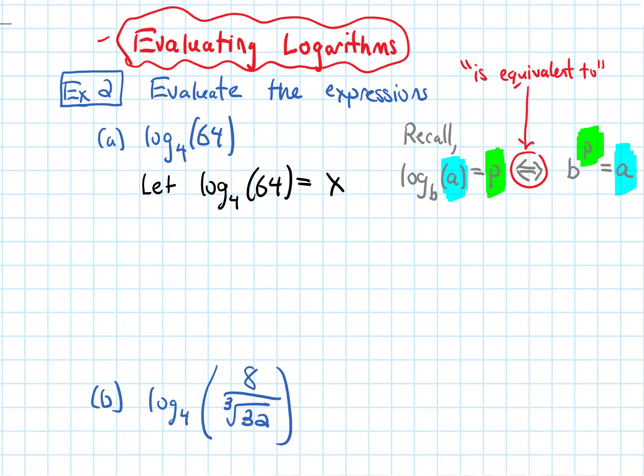So if we use that, let me just put a bubble around this. If we use that for our problem, we can transform this to exponential form. The base of the log becomes the base of the power, and then I switch the role of the input and the output. So x is now my input, and 64 is now the output.